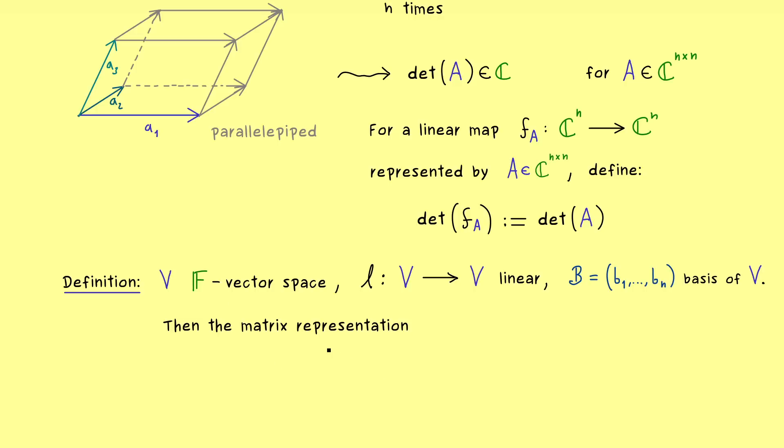And now it's clear, that the matrix representation with respect to the basis B is a square matrix. More precisely, it's an n times n matrix with entries in F. And now as before, we can use this matrix to define the determinant of the linear map. This implies, that determinant of L is a real or complex number. So there you see, this is the whole definition for the general determinant of a linear map.